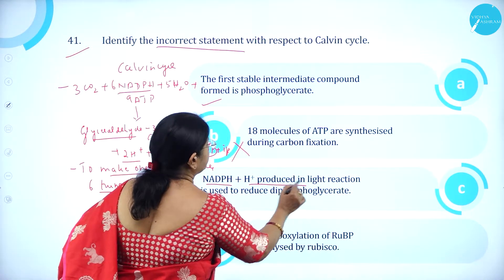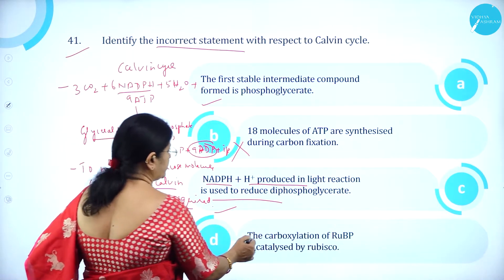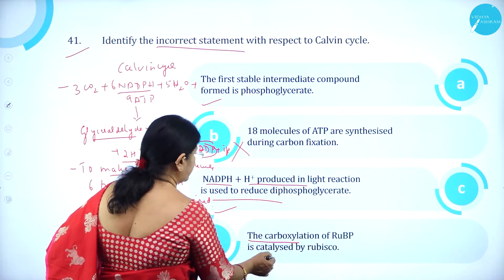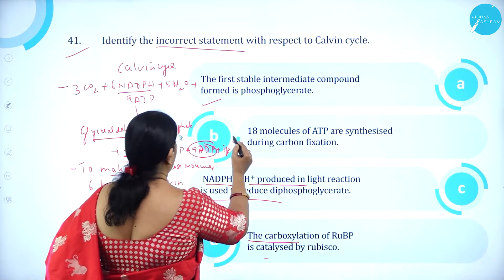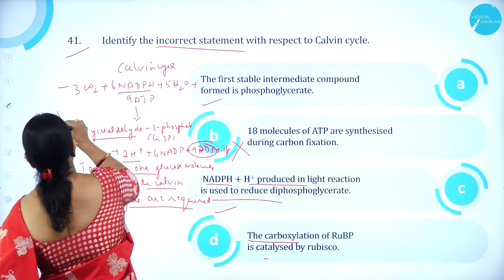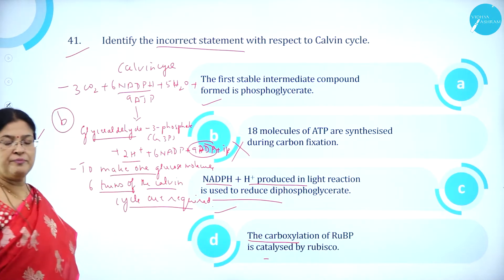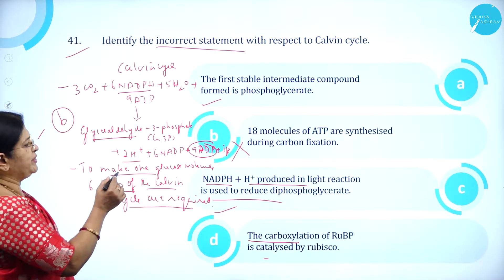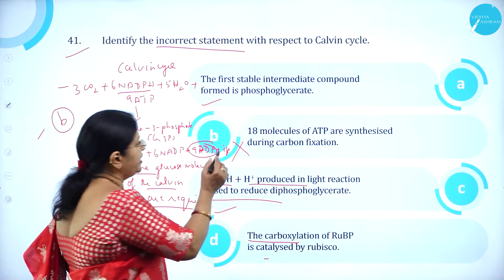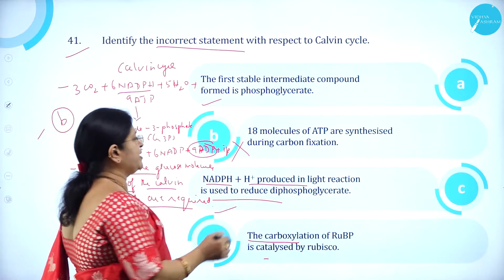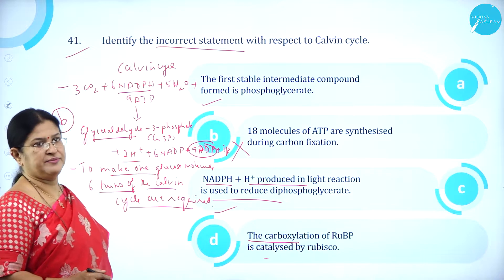NADPH produced in the light reaction is used to reduce diphosphoglycerate — that is also correct. So the incorrect statement is Option B: 18 molecules of ATP are synthesized during carbon fixation.